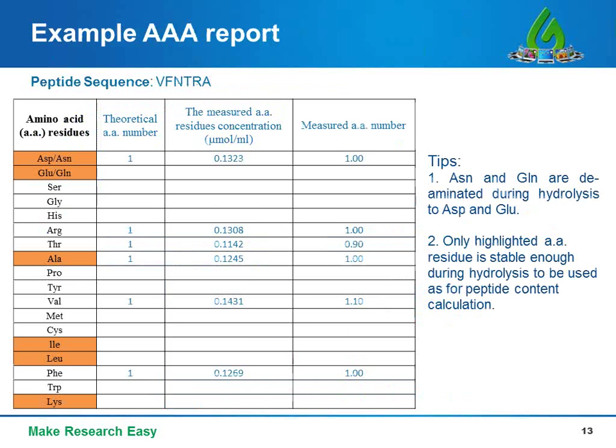Here is a simple example of an AAA report for the peptide with sequence ZFNTRA. Six amino acid residue concentrations are measured, and the number of amino acids is calculated and compared with the theoretical amino acid number. Not all amino acid types can survive acid hydrolysis — for example, asparagine and glutamine are completely deaminated and converted to aspartic acid and glutamic acid respectively, so AAA can only give the combined total for each pair. Also, a small portion of serine and threonine can be destroyed during acid hydrolysis.